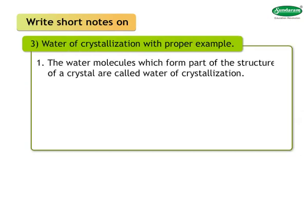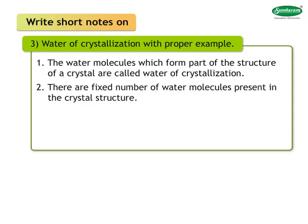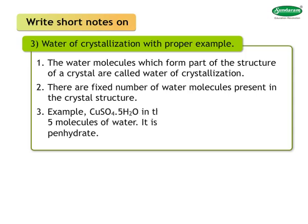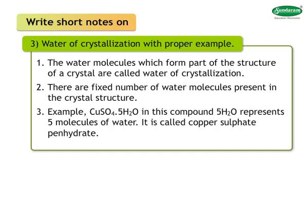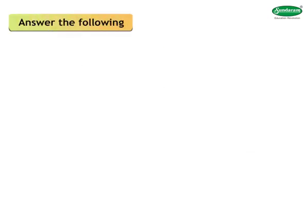Three: water of crystallization with a proper example. Answer: The water molecules which form part of the structure of a crystal are called water of crystallization. There are a fixed number of water molecules present in the crystal structure. In CuSO₄·5H₂O, the 5H₂O represents 5 molecules of water. It is called copper sulfate pentahydrate.